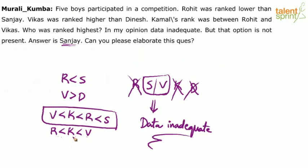Owing to that, we say the answer cannot be determined. Rohit was ranked lower than Sanjay. There are two possible cases from the third statement — it says Kamal's rank is between Rohit and Vikas. So it can be Vikas, then Kamal, then Rohit — or Rohit followed by Kamal followed by Vikas. If we take Kamal's rank between Rohit and Vikas in this order, then definitely Sanjay will be the highest in this case.